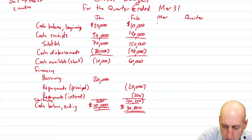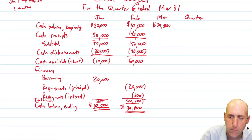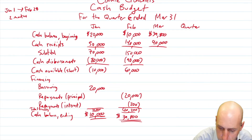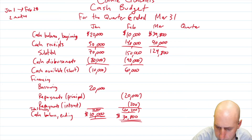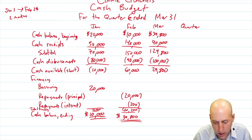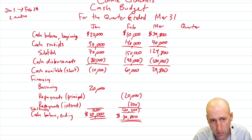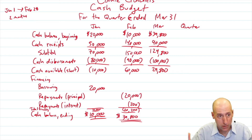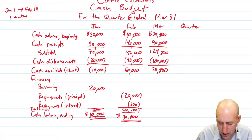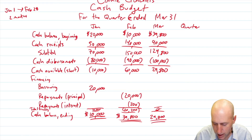Our cash balance beginning of March is $39,800. What happened in March? We took in $90,000 and paid out $100,000. So $90,000 in gives us a subtotal of $129,800, and $100,000 out leaves us with $29,800. We don't need to borrow any money. In a theoretical world we could invest this money or pay shareholders a dividend, but this question doesn't give us that information, so I'll assume there's no financing — zero. We end the quarter with $29,800 in the bank.